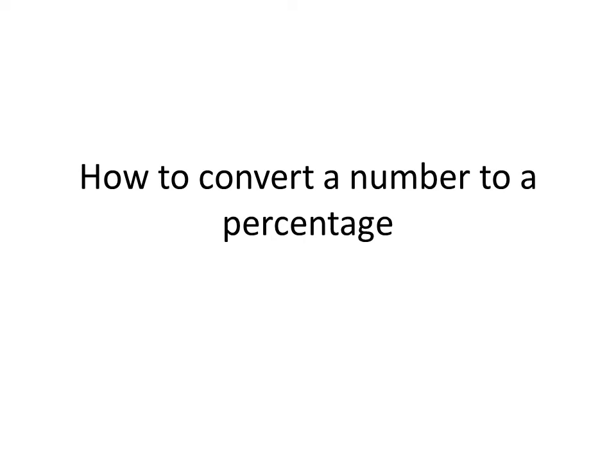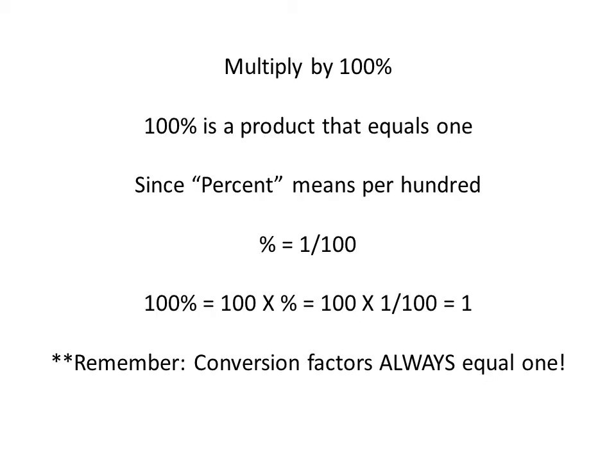In this short video we're going to explain how to convert a number to a percentage. The answer is that you're going to take your number and multiply by one hundred percent. One hundred percent is a product — in other words, a multiplication problem.